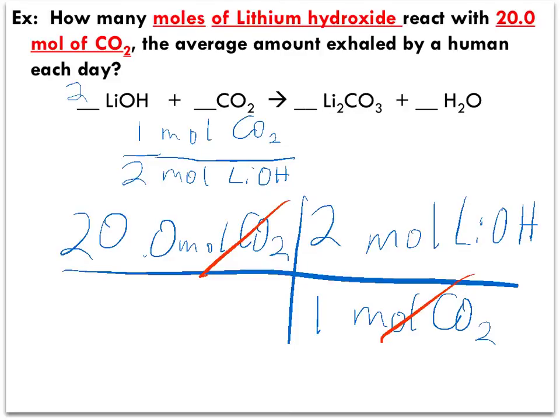So if moles of carbon dioxide cancel, we have an answer in moles of lithium. The correct number of significant digits, which is 3, matching the given information. The answer to this question is 40.0 moles of lithium hydroxide.